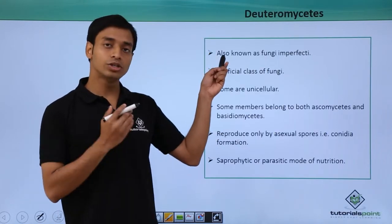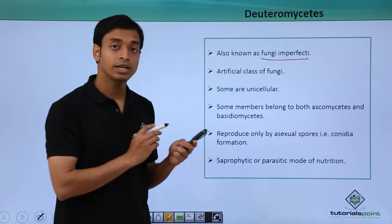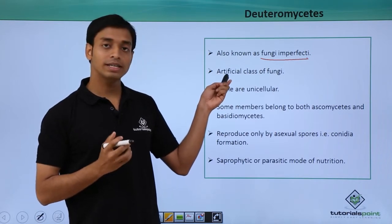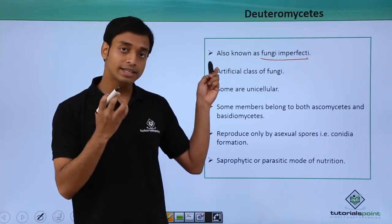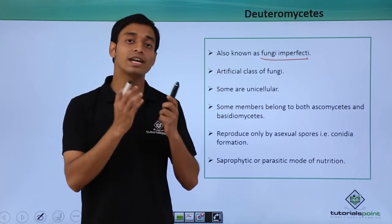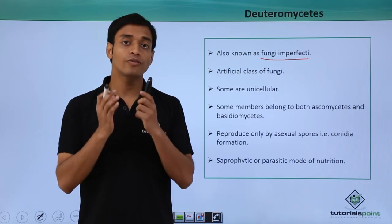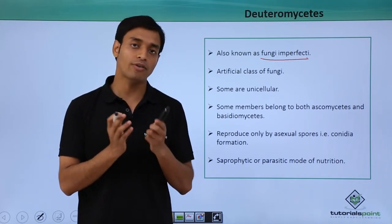Deuteromycetes have been given the name Fungi Imperfecti. This is basically an artificial class of fungi, and it includes those groups of fungi which cannot reproduce sexually, or where the sexual mode of reproduction has not been discovered or found.